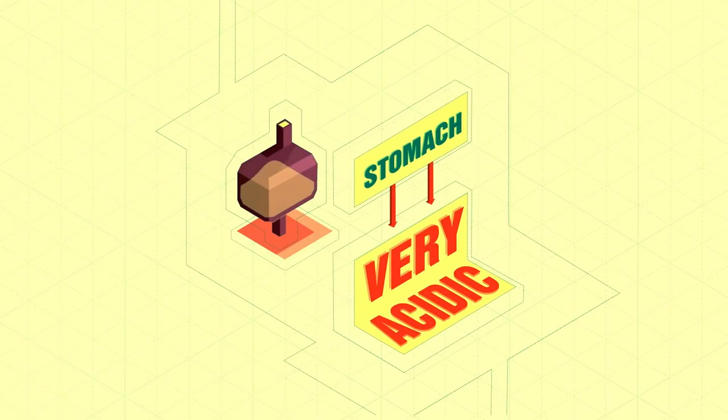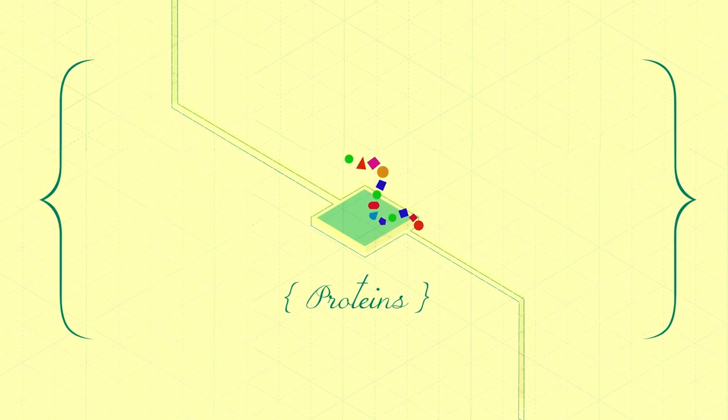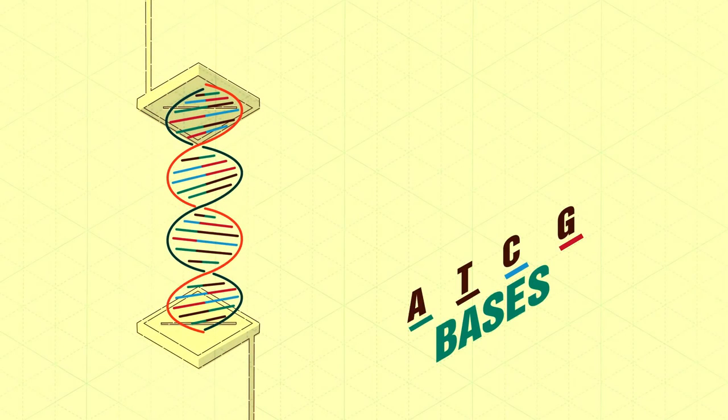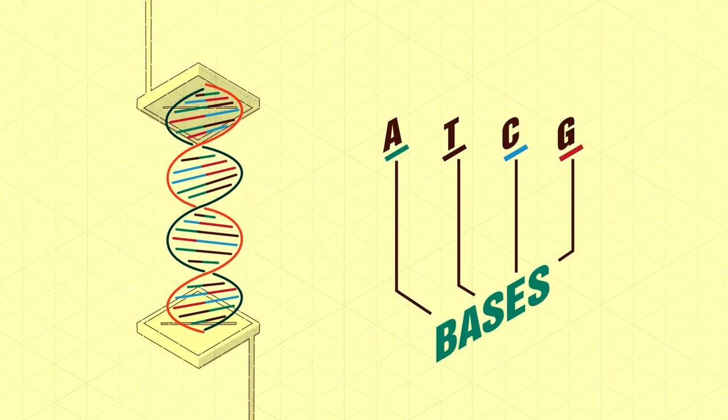Our stomachs are very acidic. Our blood is slightly basic. Our proteins are made up of amino acids. And the letters in our genetic code, those A's, T's, C's, and G's, are all bases.